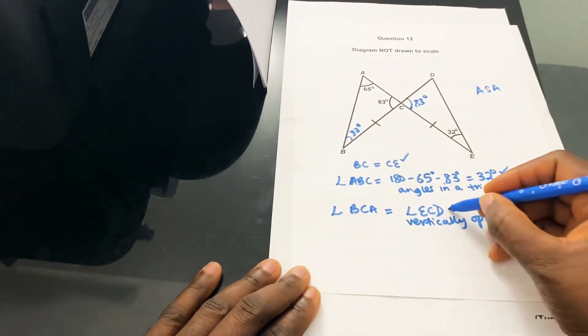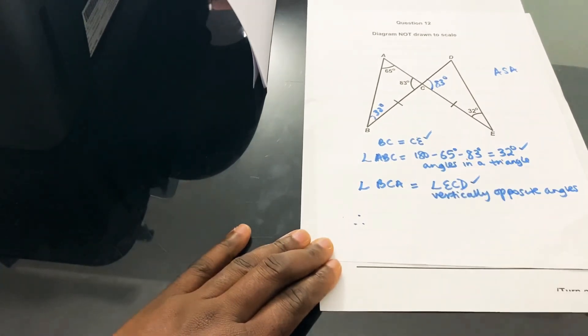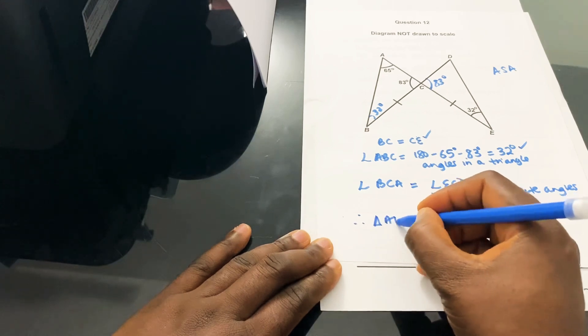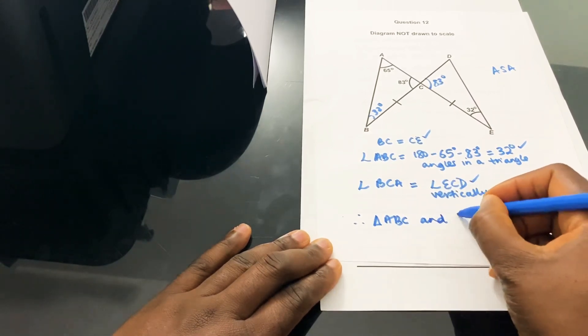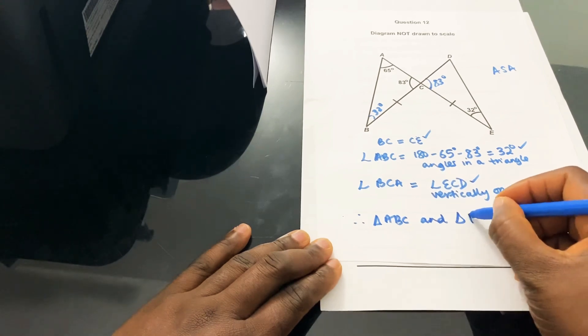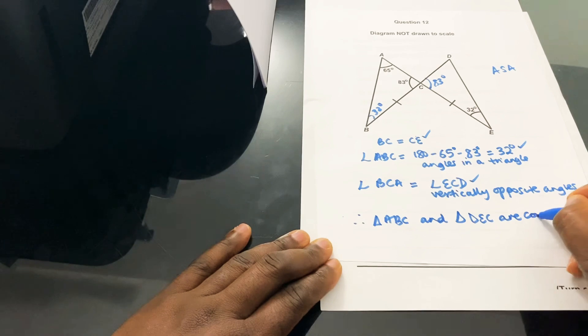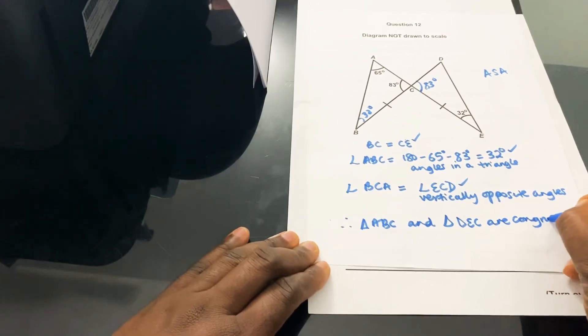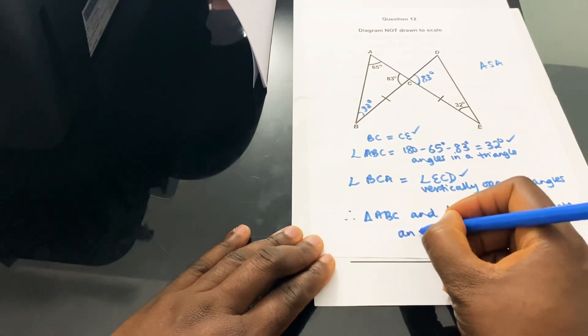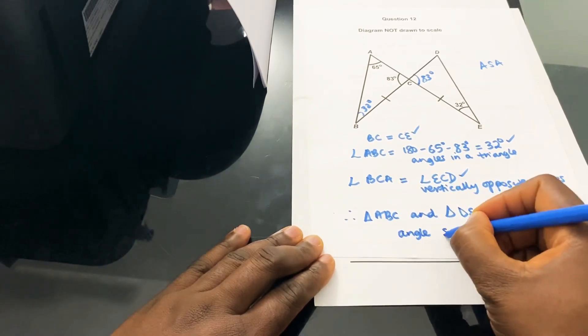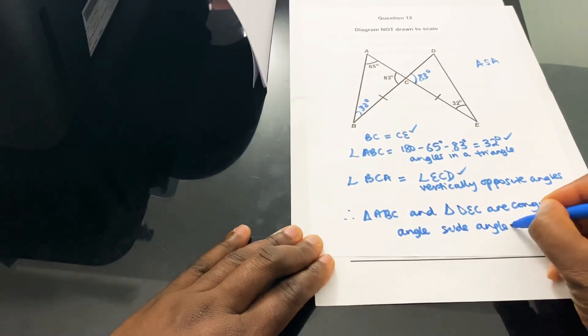Then you can say that therefore triangle ABC and triangle DEC are congruent. Once you've written that, you have to write your reason: angle-side-angle. That's it.